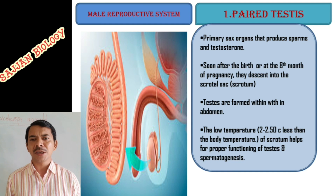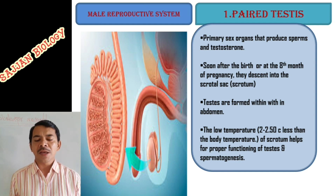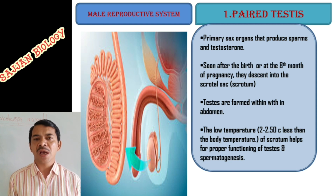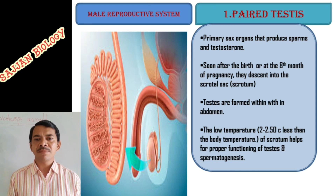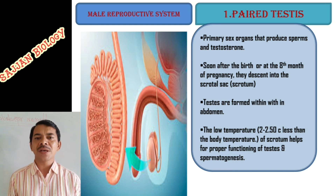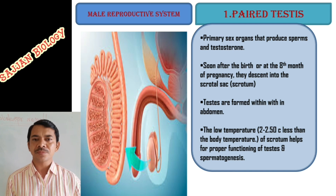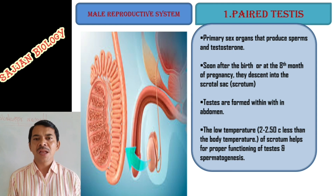Soon after birth, or at the eighth month of pregnancy, the testes descend into the scrotum. The scrotum is a sac-like structure located below the abdominal cavity. Within the developing baby, the testes are located in the lower abdominal cavity and they descend into the scrotum through the inguinal canal.